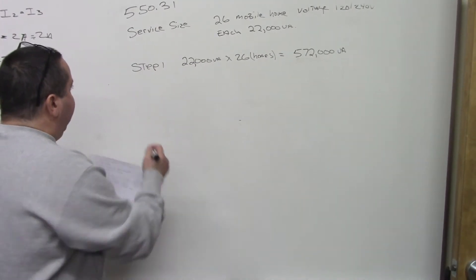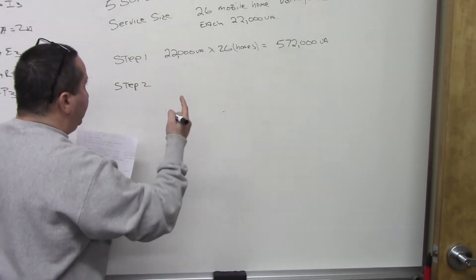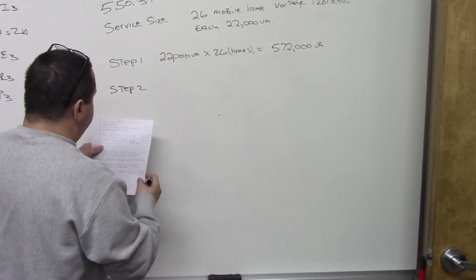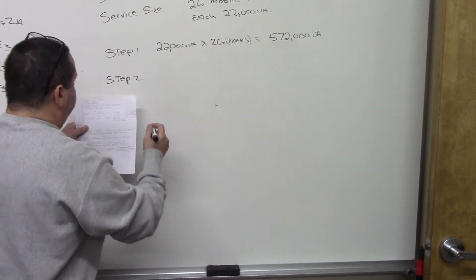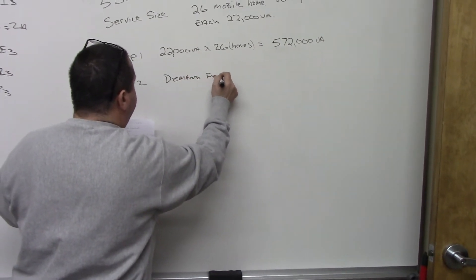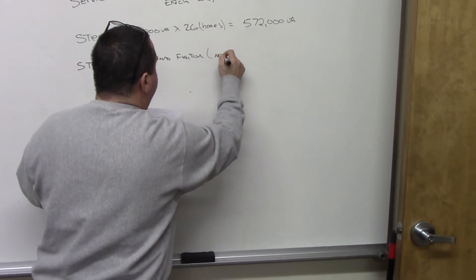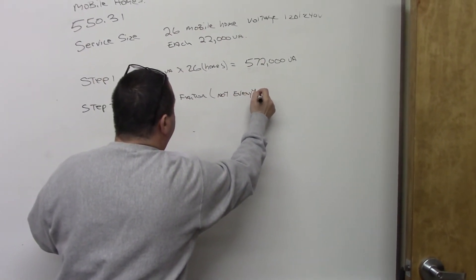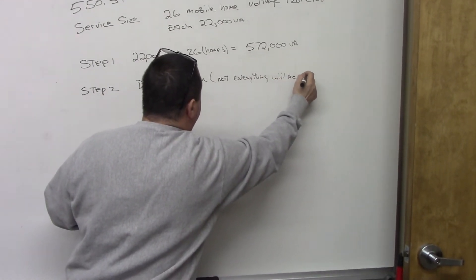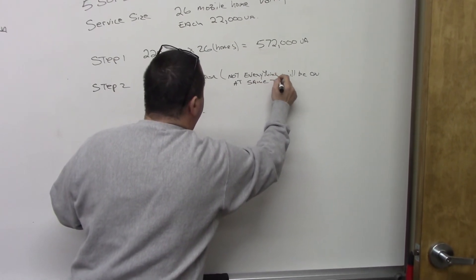So there's going to be a demand factor. And there's a table. So step two is a demand factor for these 22,000 volt amp mobile homes. The demand factor, meaning that not everything will be on at the same time.